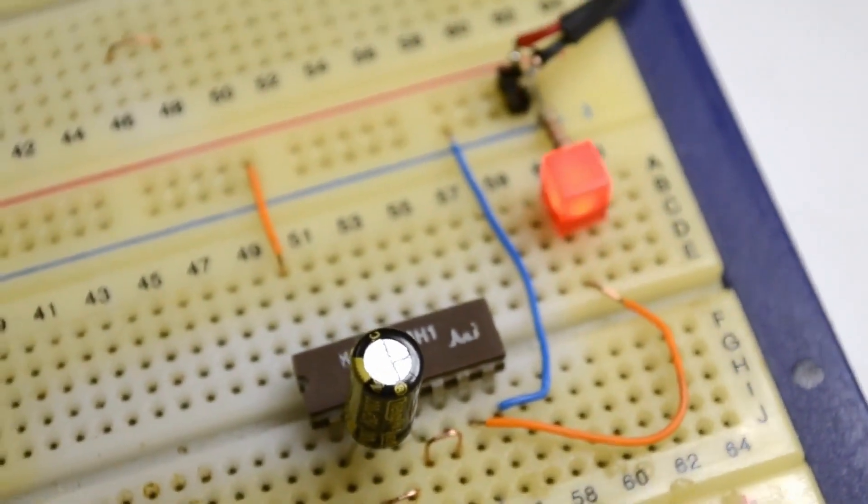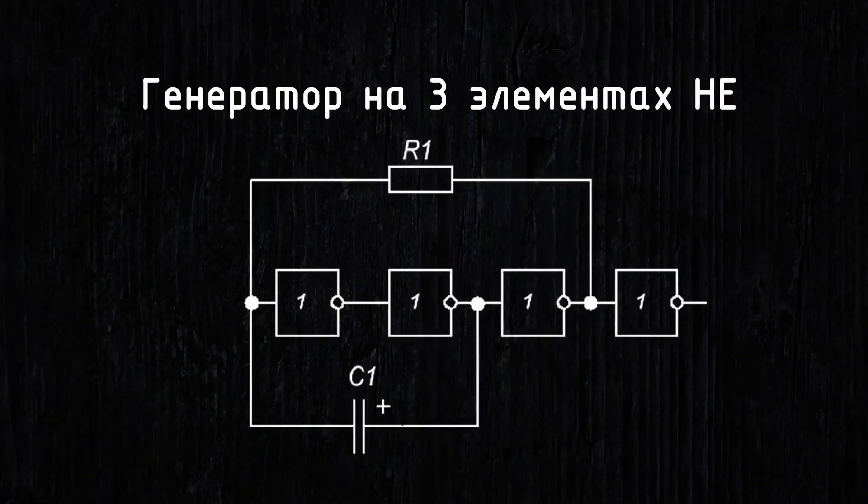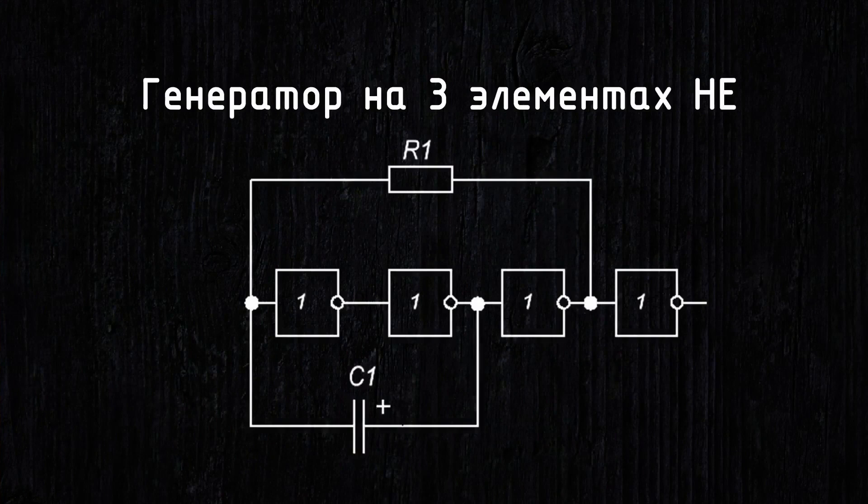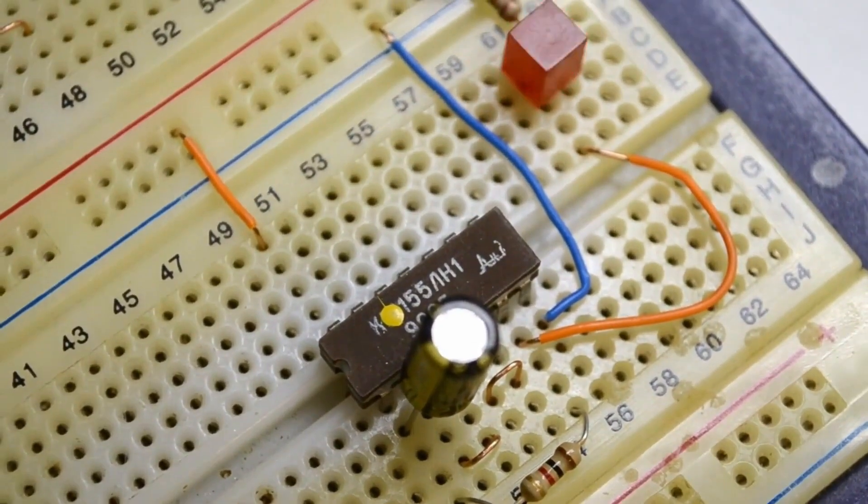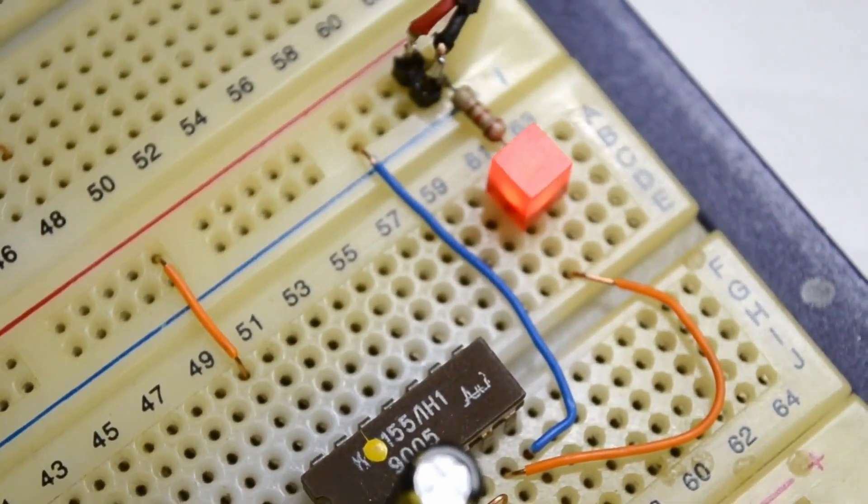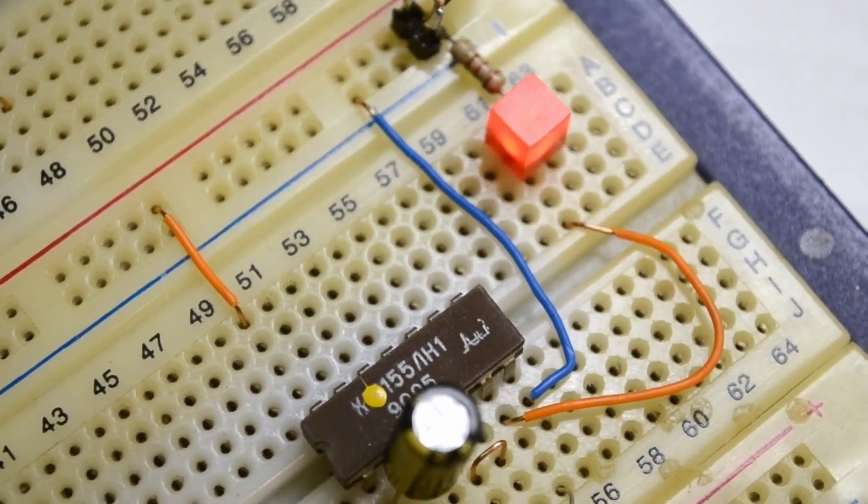It is worth noting here that different series of microchips have different internal properties. Simply put, each microchip has boundaries for the applicability of the generator circuit. Under some parameters, it will work, under others, it won't. This should be taken into account.